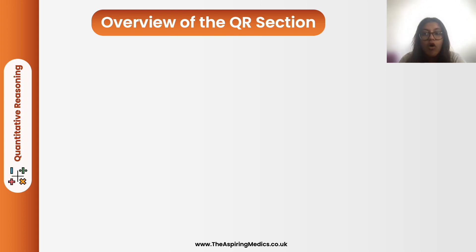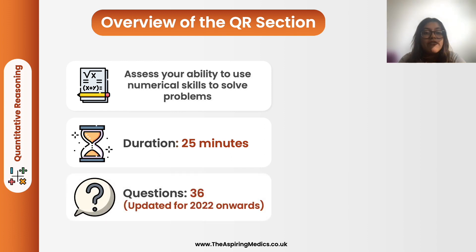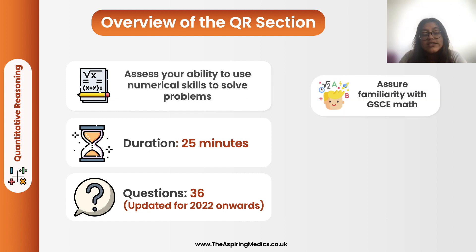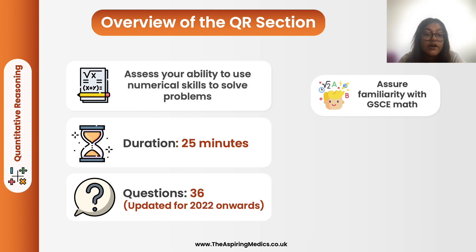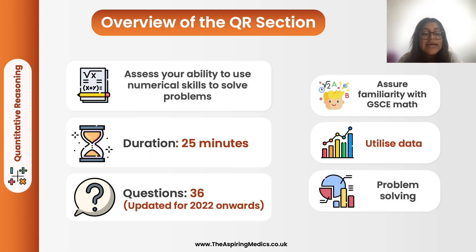Let's get a quick overview of the quantitative reasoning section. This section assesses your ability to use numerical skills to solve problems. It is 25 minutes long and you have to answer 36 questions. The kinds of skills it tests are: firstly, familiarity with GCSE level math; secondly, your ability to utilize and analyze data, which is a big part of medicine; and lastly, your problem solving skills.